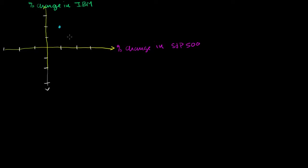On another day, the S&P goes up maybe 1.5% and IBM only goes up 0.5%. Then maybe the S&P 500 goes down 2% and IBM goes down 3%. Maybe there's even a day the S&P went down but IBM stock went up — IBM reported some good news despite the rest of the market being down. Every one of these points represents a day with the percent change in IBM relative to the percent change in the S&P 500.